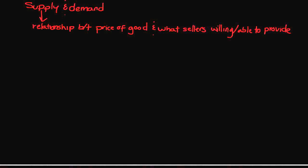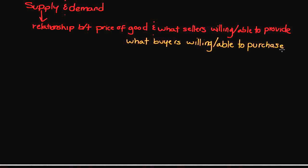Demand is very similar to supply. It also is a relationship involving the price of a good. But where they differ is that demand is the relationship between the price of a good and what buyers are willing and able to purchase. Willingness again denotes desire — a desire to purchase something — while ability refers to having the financial means and the time necessary to purchase a product. So unless you have both components, you wouldn't necessarily be considered to have demand for something.